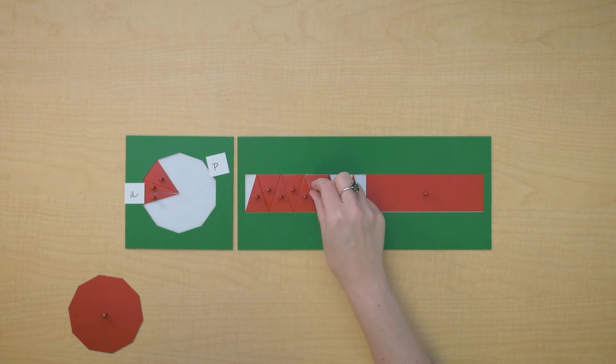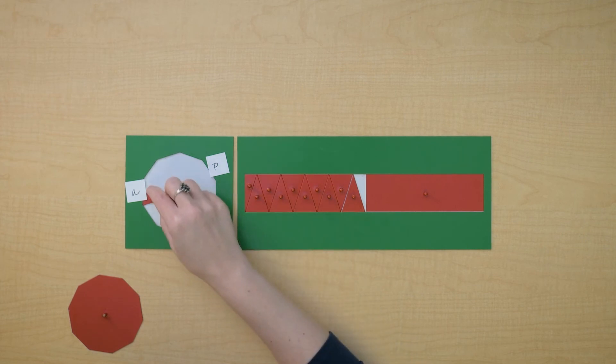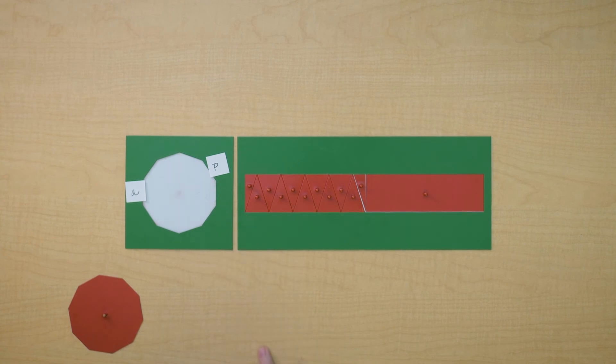Now let's take a look at our height of the rectangle. Oh! Look at that. The height is the apathem.